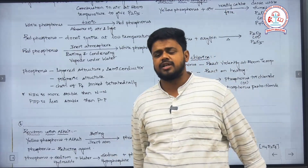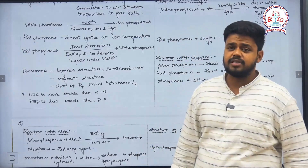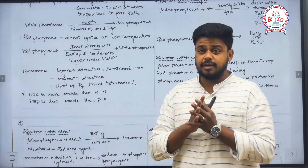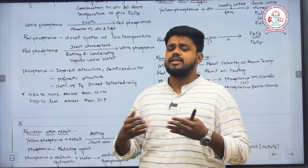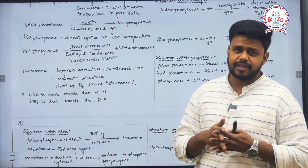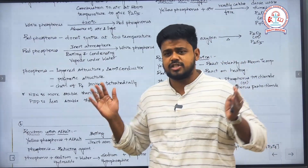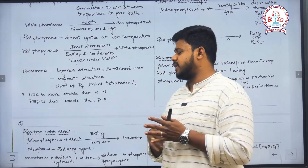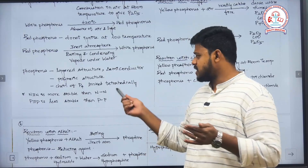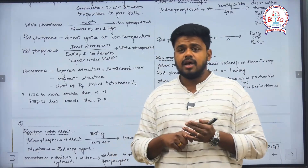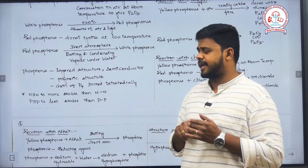Black phosphorus exists in the form of a layered structure. It is a good semiconductor, meaning it partially conducts electricity, and on the addition of pentavalent impurities it has an ability to conduct electricity. It also has a polymeric structure, forming long continuous chains, and exists in the form of P4 units linked tetrahedrally — each phosphorus is surrounded by four other phosphorus atoms.